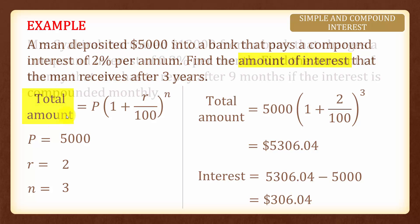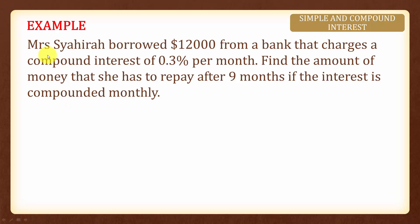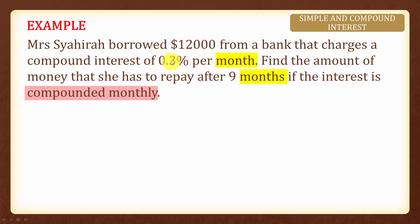Here, Mrs. Shahira borrowed twelve thousand dollars from a bank that charges a compound interest of zero point three percent per month. We are asked to find the amount of money that she has to repay after nine months if the interest is compounded monthly. Since the compound interest here is per month and we need the amount after nine months compounded monthly, all time units are the same.